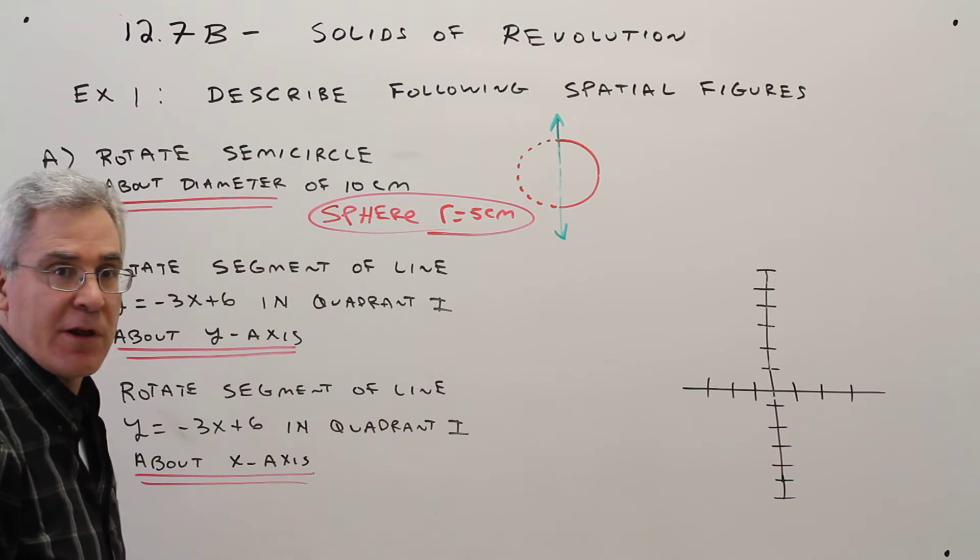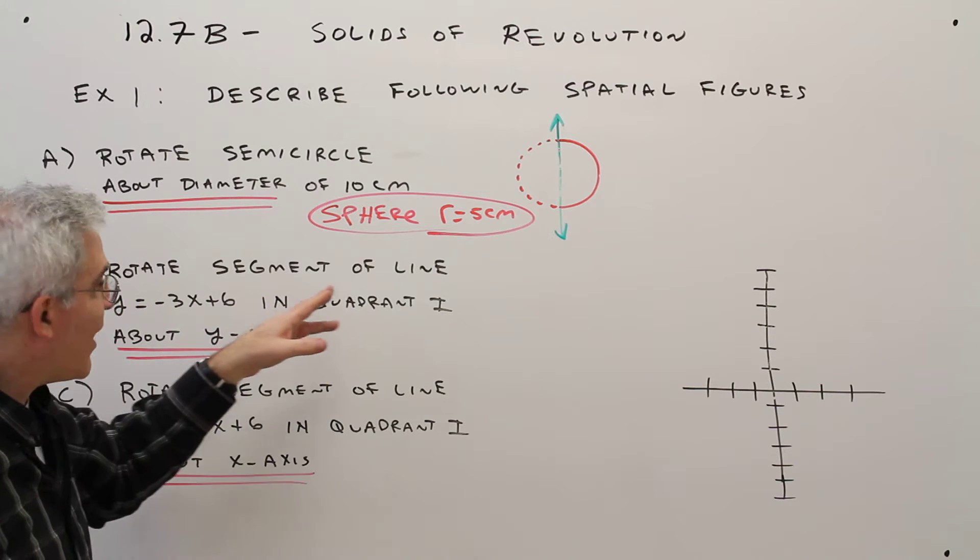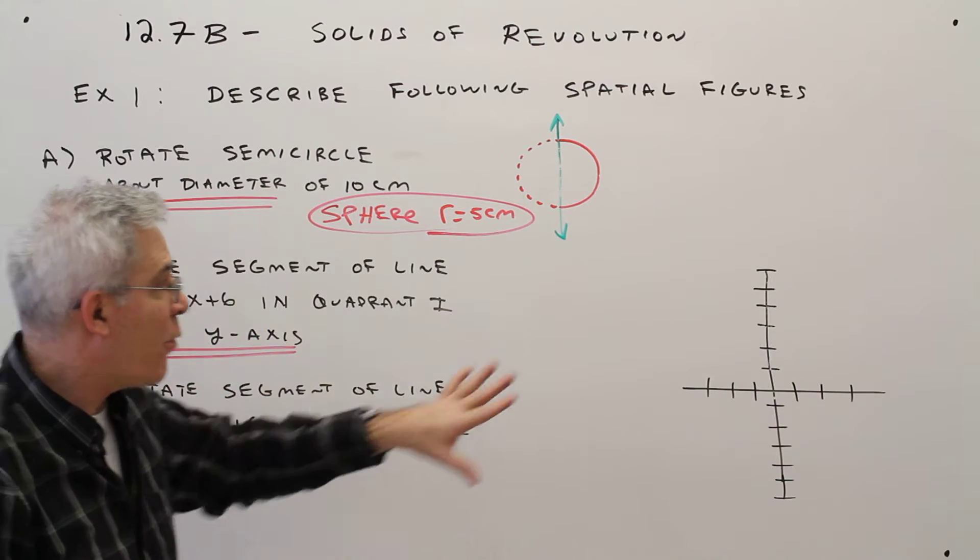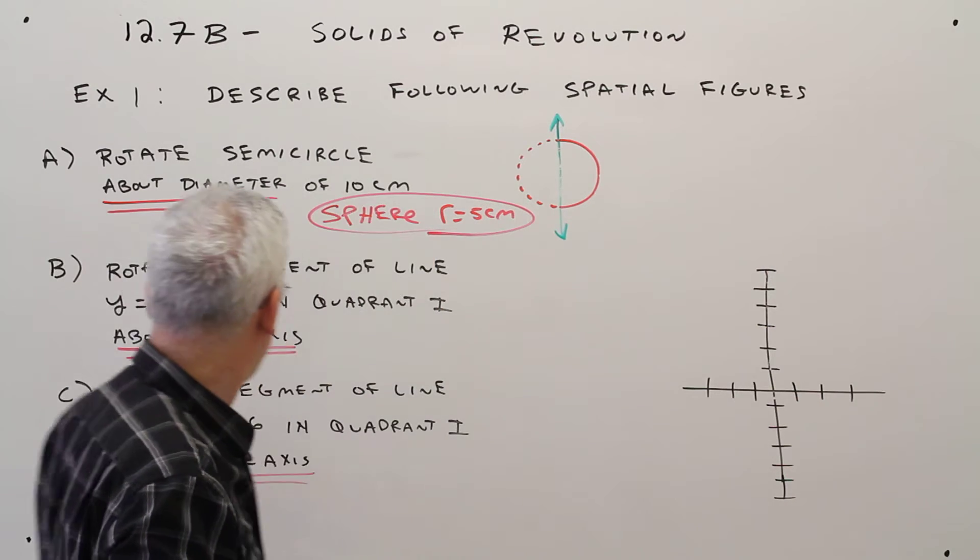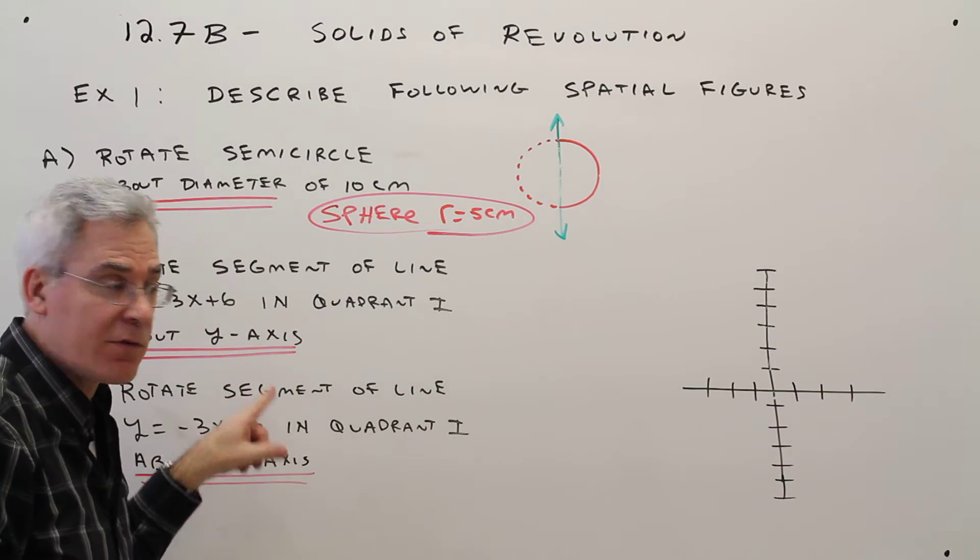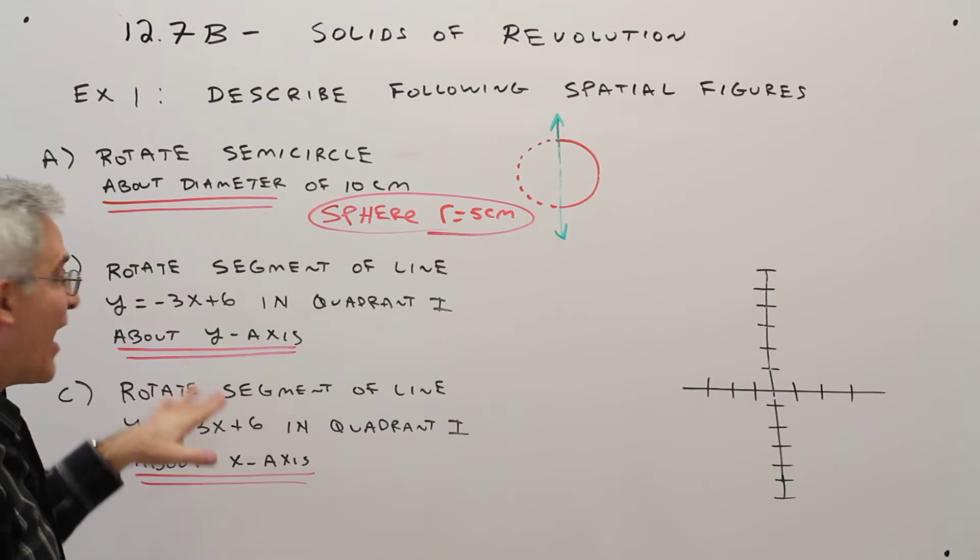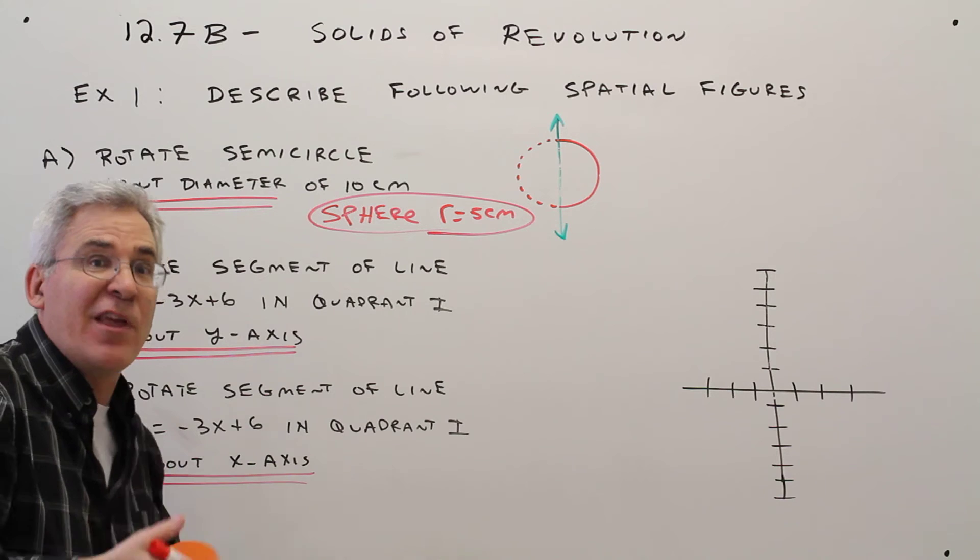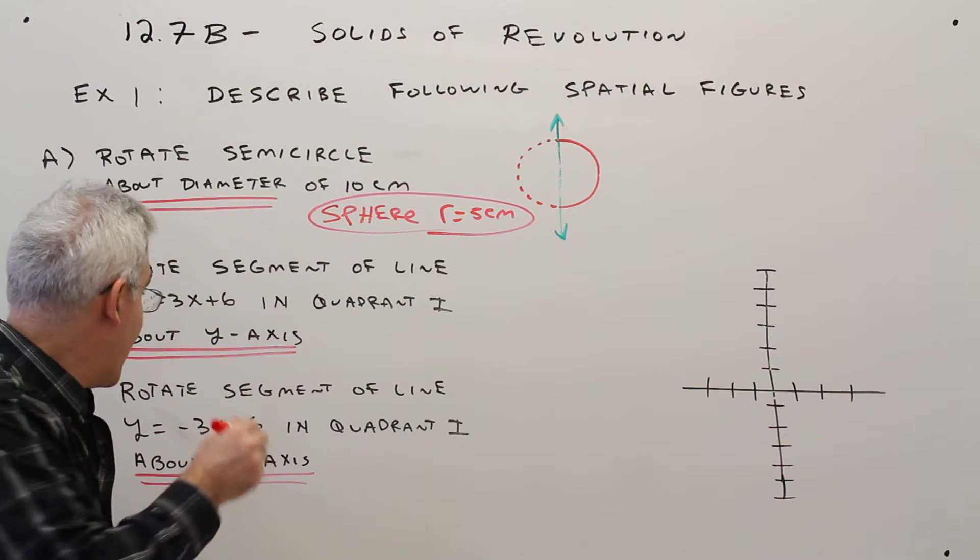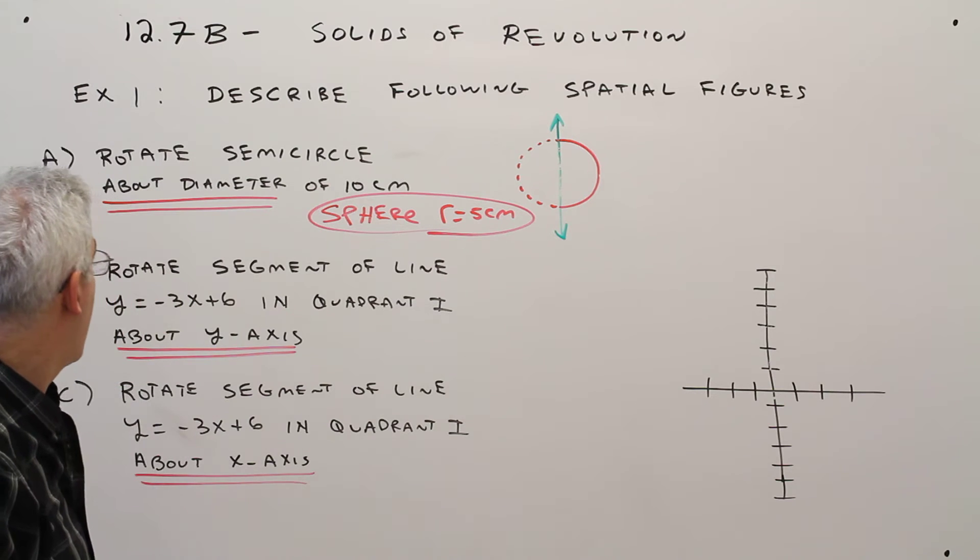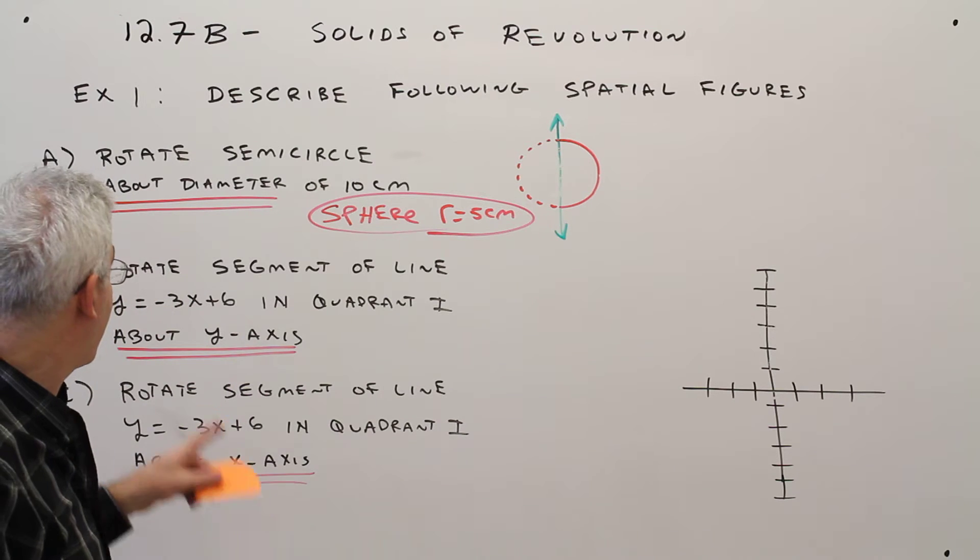These second parts go together. The first, rotate the segment of line Y equals minus 3X plus 6 in quadrant 1. That's the first quadrant. About the Y-axis. And then the second part says about the X-axis. Again, I emphasize what we're rotating about. That really changes the problem. So you want to make sure that you understand that and circle it if need be. All right, so first what we've got to do is draw that line segment.